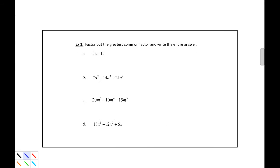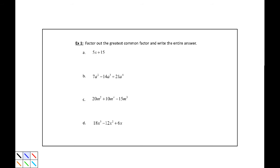Alright, example one. Factor out the greatest common factor and write the entire answer. First, we need to recognize that the greatest common factor of these two expressions is 5. They don't have variables in common, and 5 is the largest number that divides into both of those.